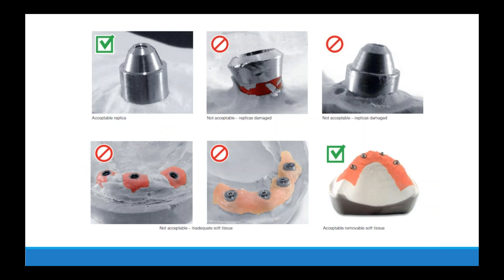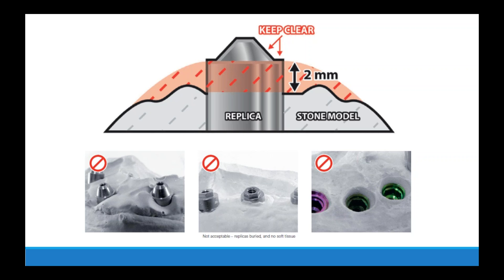For those who plan to pour up your own master models: always use brand new replicas, as we do here in the laboratory, and always use a soft tissue material — not just a little bit around each implant, but a pretty substantial soft tissue moulage. You want it to go at least two millimeters beyond the interface of the analog. If you routinely pour models in your practice, make sure everybody is aware of these rules. Contact us if needed — we have a great model prep guide as well as a video on our website and YouTube channel.